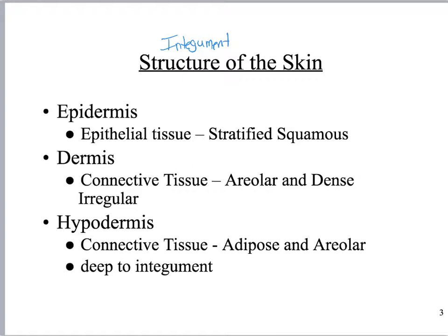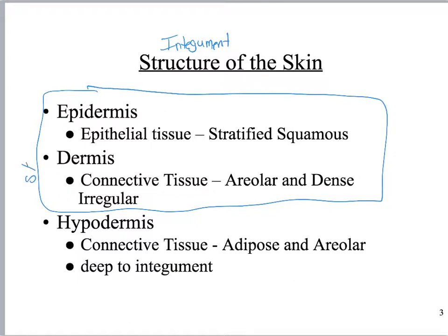The integument consists of two large layers: the dermis and epidermis. We also often discuss the hypodermis because it is just deep to the skin. This is typically some kind of connective tissue, often adipose or areolar. It's not part of the integument but it's right next to it. This is also called the subcutaneous region — this is where you get subcutaneous or hypodermic injections.